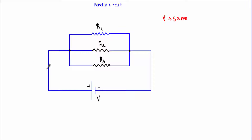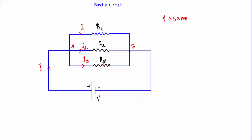Now as this is the positive terminal of the source, it will emit a source current, let's say I. This common point is denoted as A and this common point is denoted as B. When this total current enters into point A, it will have three parts to divide — one will go through R1, another through R2, and another through R3. The current flowing through R1 is I1, through R2 is I2, and through R3 is I3.